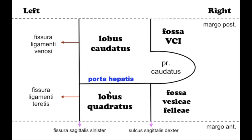The quadrate lobe, lobus quadratus, is situated on the undersurface of the right lobe, bounded in front by the anterior margin of the liver, behind by the porta hepatis, on the right by the fossa for the gallbladder, and on the left by the fossa for the umbilical vein.